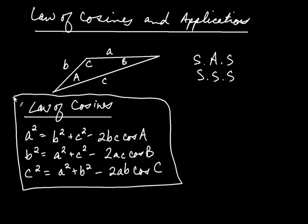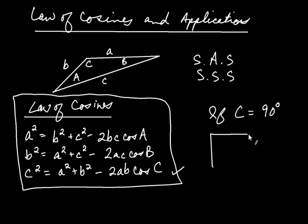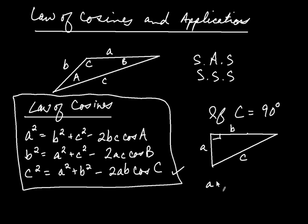There's one interesting thing to note before we do some applications. If angle C happened to be 90 degrees, then cosine of 90 degrees is zero, and the formula reduces simply to a squared plus b squared equals c squared — the Pythagorean theorem. So the Pythagorean theorem is really hiding inside the law of cosines, which is a kind of interesting connection.